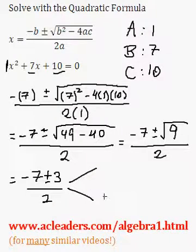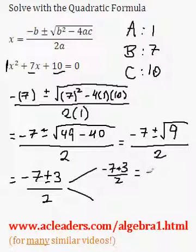And we're going to have two solutions, of course. Negative 7 plus 3, all over 2, which will give us negative 4 over 2, which is equal to negative 2.